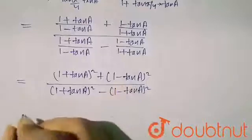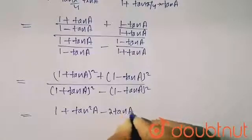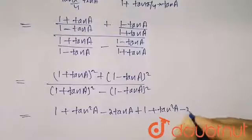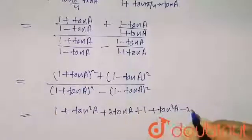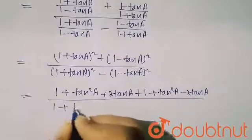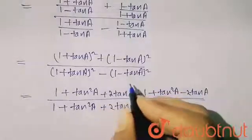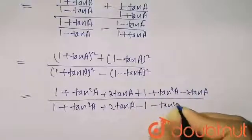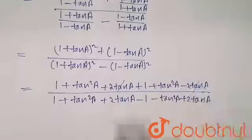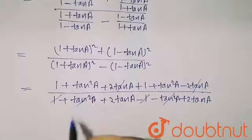Now I have to open the squares. So (1 + tan a)² gives 1 + tan²a + 2 tan a, and (1 - tan a)² gives 1 + tan²a - 2 tan a. Adding them in the numerator: the +2 tan a and -2 tan a cancel, giving 2 + 2 tan²a. In the denominator subtracting: the 1 and tan²a terms cancel, leaving 2 tan a + 2 tan a = 4 tan a.